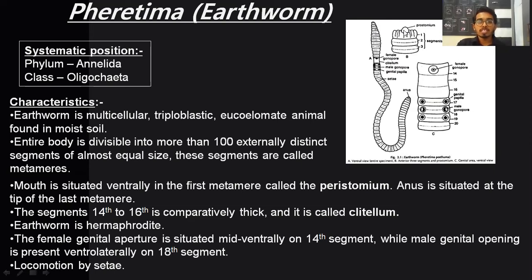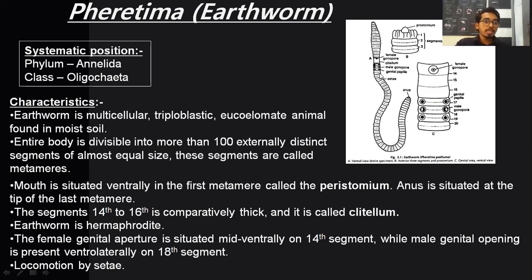In the peristome region, there is a small tongue-like structure protruding out called the prostomium. The anus is situated at the tip of the last metamere. Almost between the 14th to 16th segment, these segments are slightly swollen and distinct from other segments — this region is called the clitellum, which usually helps in mucus production during sexual reproduction.